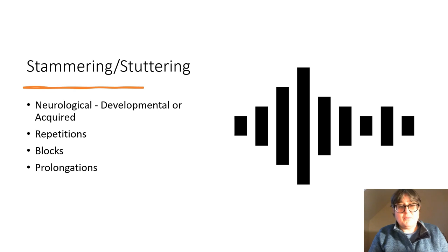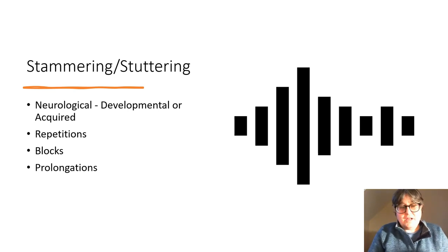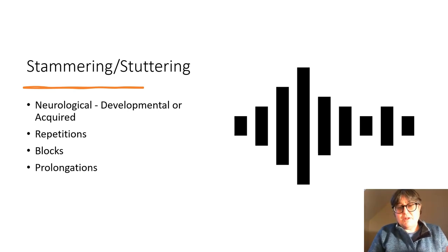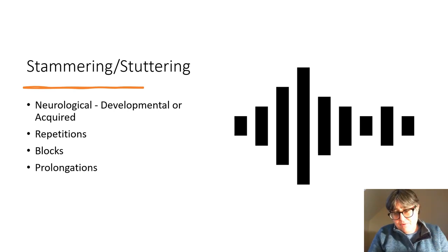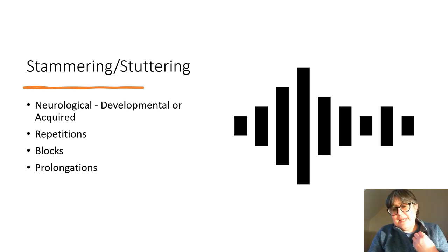Stammering is probably the one that most people would be aware of — the most well known of dysfluencies, but not necessarily the most well understood. Stammering is a neurological condition. The actual apparatus of speech can work okay, but there's something to do with the timings in the brain — the messages from the brain that get to the tongue and the lips — that interferes with the flow of speech.